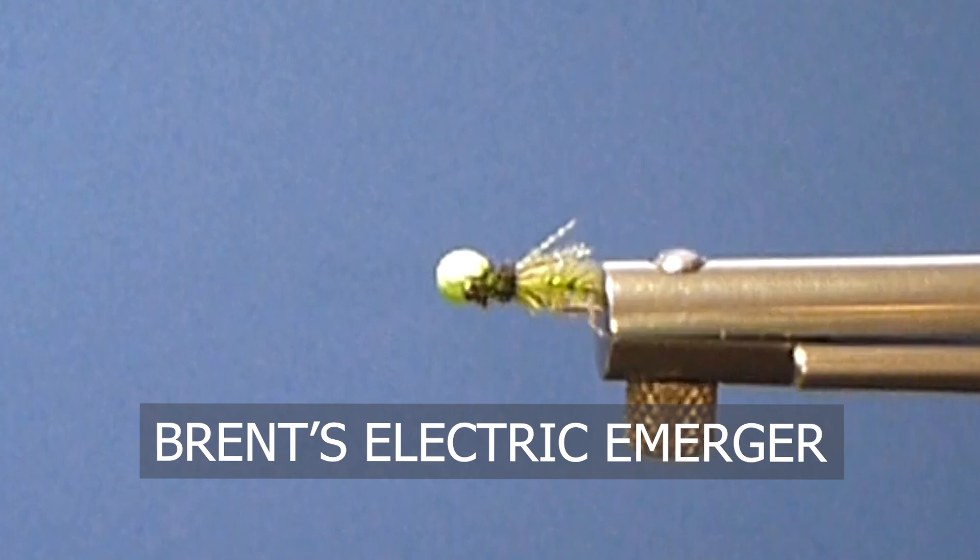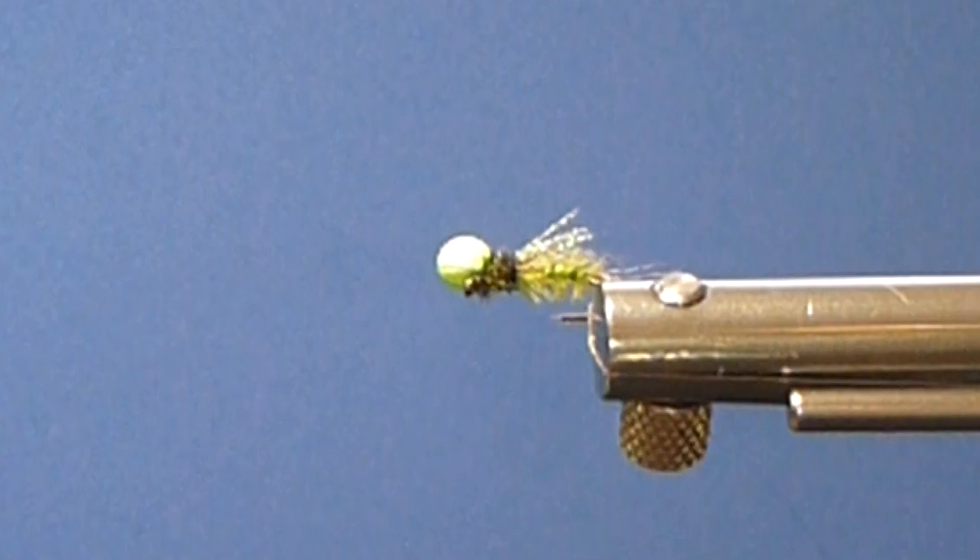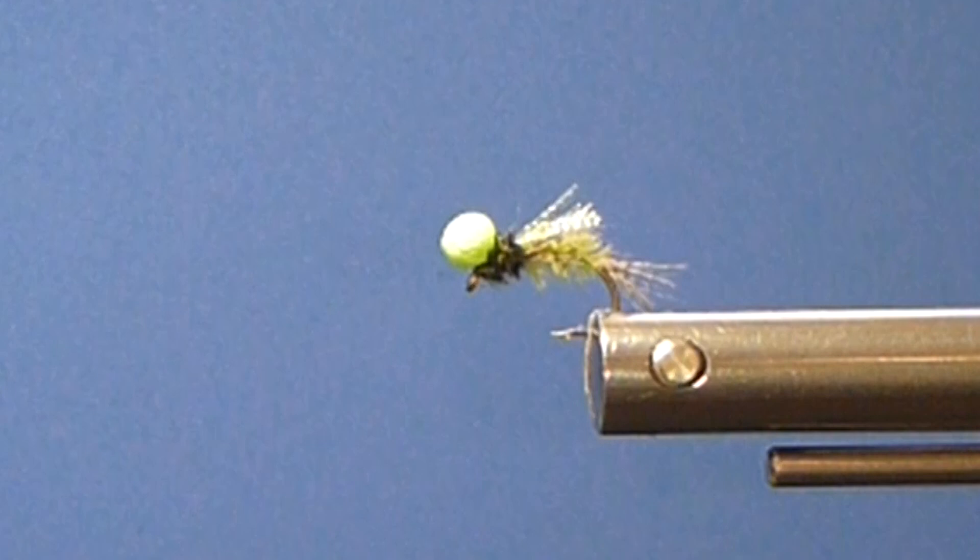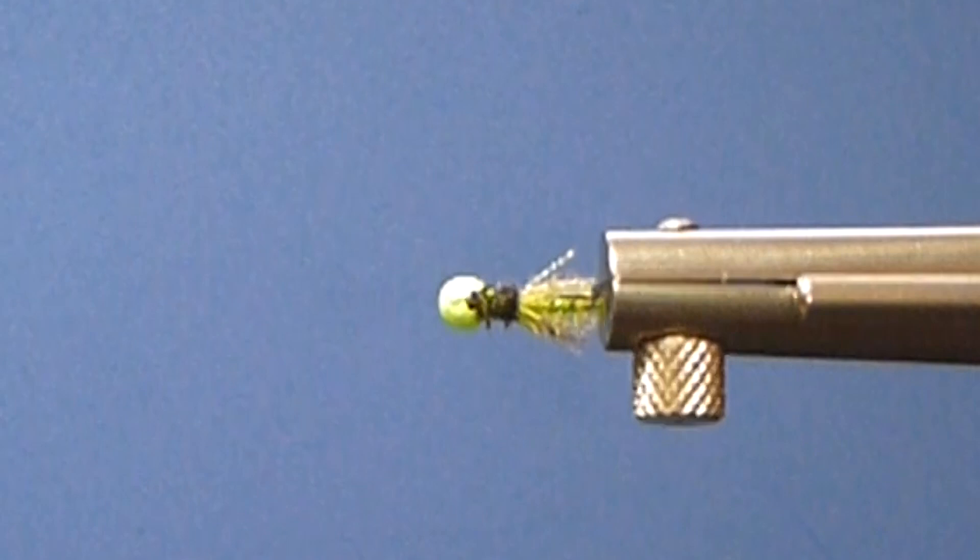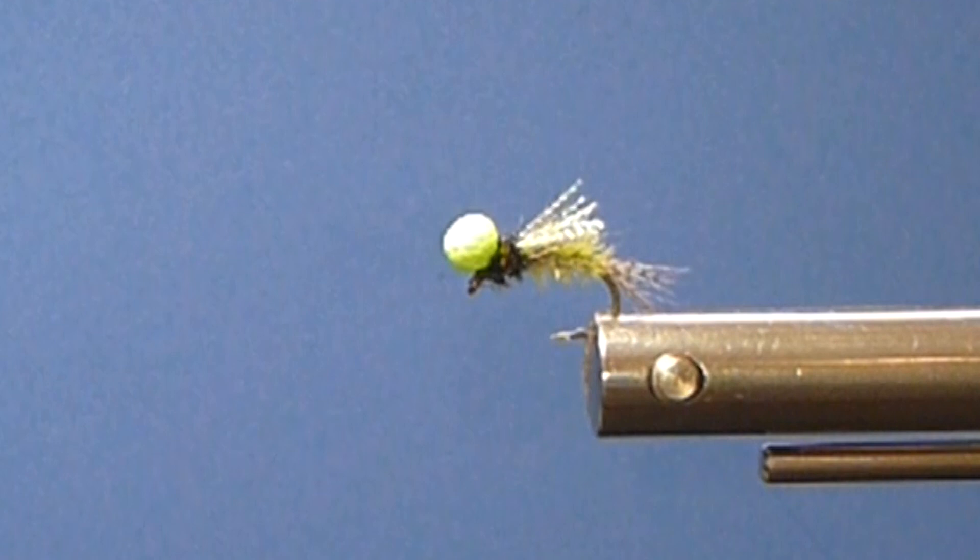I'm tying this one in a bright green or kind of a limey green color. It's a very nice attractor color. We can go to nice subtle colors as well as tans, blacks, whatever you wish. But this is a pretty good attractor for a lot of the streams or lakes you want to go to. It'll work in many different waters.